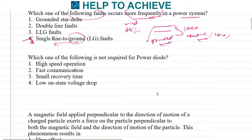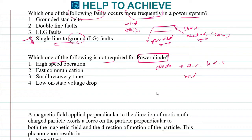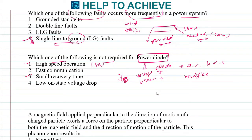Next: which one of the following is not required for a power diode? Power diodes are used for high voltages and high currents. Diodes are semiconductor devices, so they operate at high speed; recovery time should be small; and voltage drop across the diode should be less. Among the options, fast communication is not required, so fast communication is the correct answer.